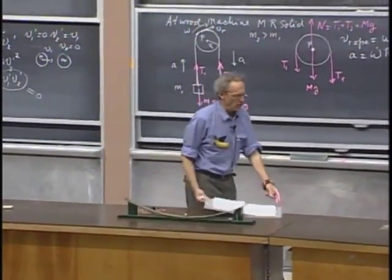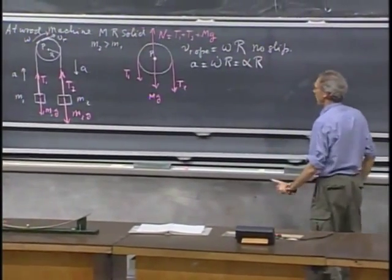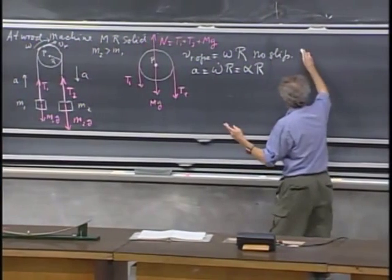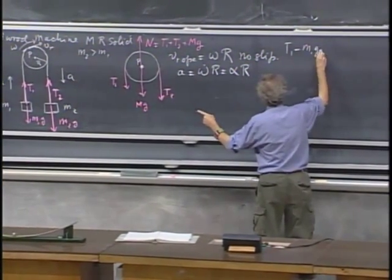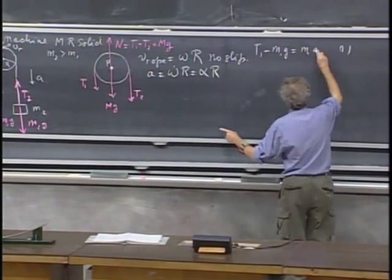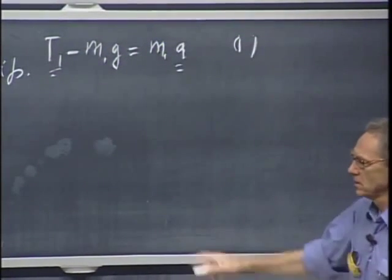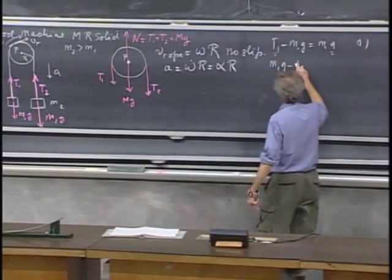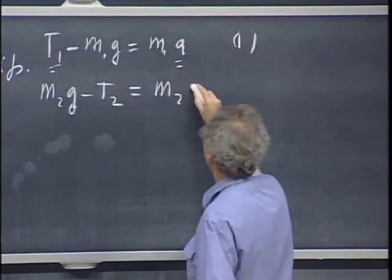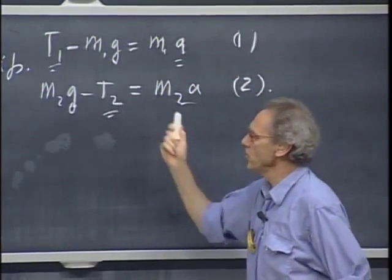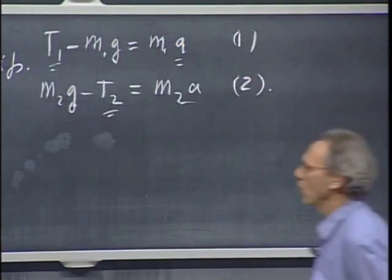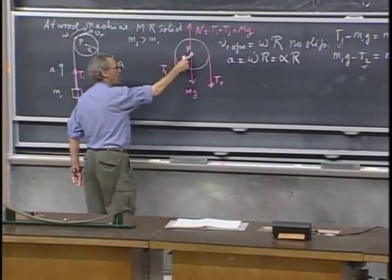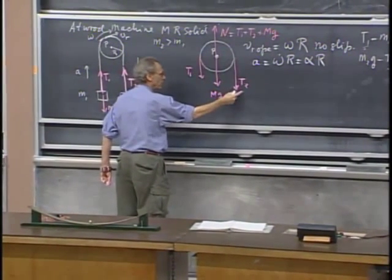Let's write down Newton's second law for object one. Calling down positive for object one: T1 minus m1 g equals m1 A. One equation — I don't know T1 and I don't know A. For object two, calling down positive: m2 g minus T2 equals m2 A. That's a second equation, but a new unknown T2 has been added, so I need more. I also have to think about the pulley.